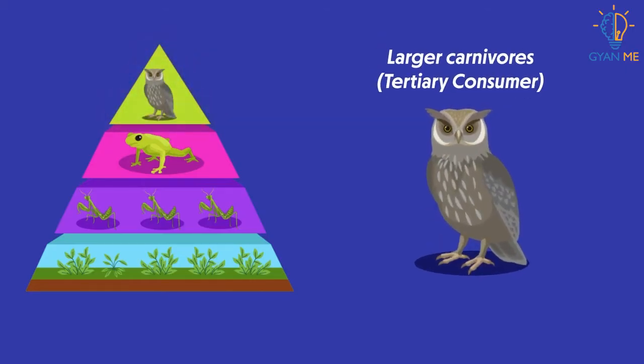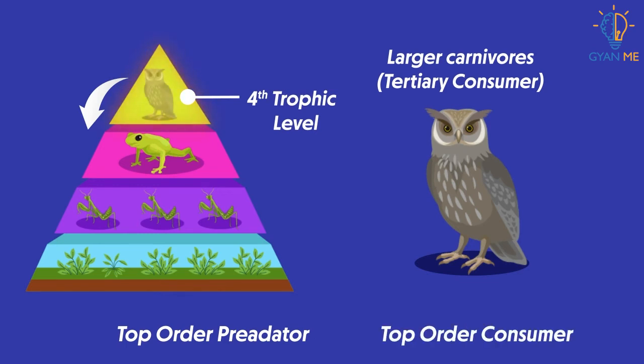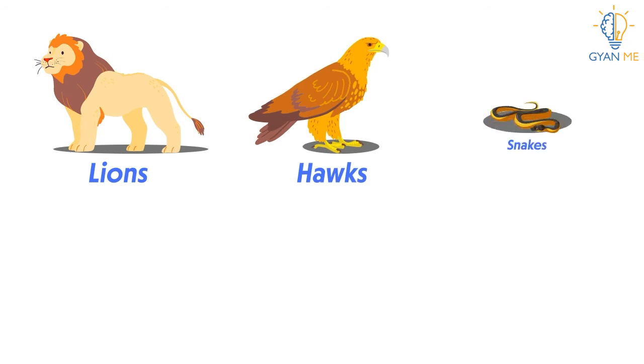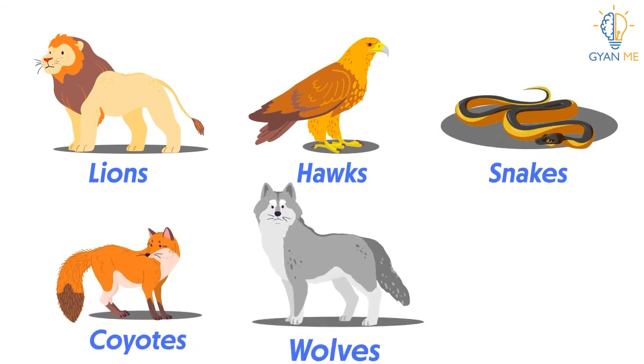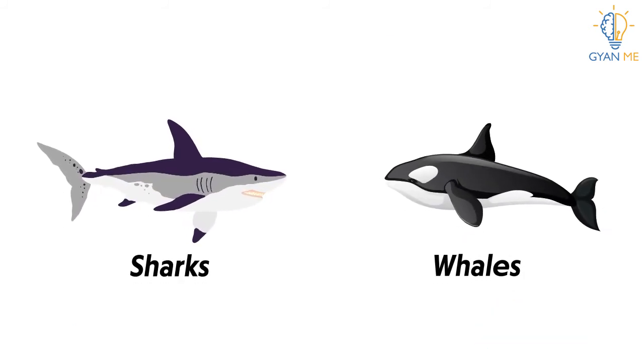Still larger carnivores or tertiary consumers form the fourth trophic level. They are the ones who feed on secondary consumers and they don't have any other predator beyond them or on the top of them. And thus they are called top order predators or top order consumers. They are also termed as apex predators and have no natural enemies. For example, lions, hawks, snakes, coyotes, wolves, etc. are tertiary consumers. While sharks or whales are aquatic tertiary consumers.